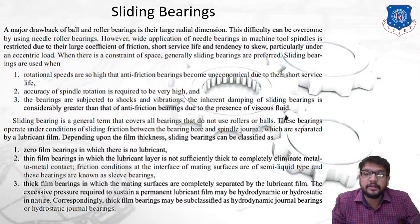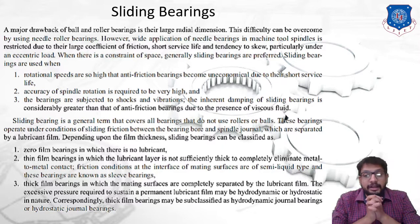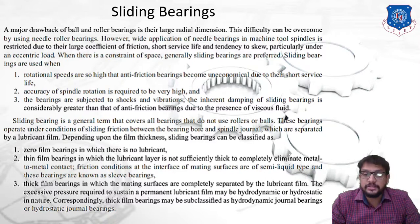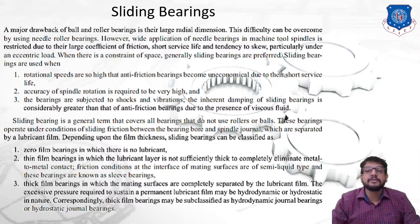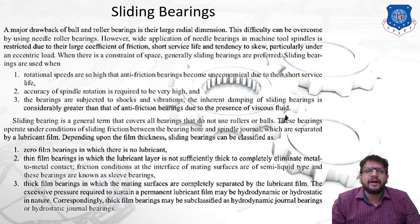There are two types of bearings: sliding contact bearings and rolling contact bearings. In rolling contact bearings there are further two types — ball bearings and roller bearings. A drawback of ball and roller bearings is that large radial dimensions are required. This difficulty can be overcome by using needle roller bearings; however, wide application of needle bearings in machine tool spindles is restricted due to large coefficient of friction, short service life, and tendency to skip particularly under eccentric load.